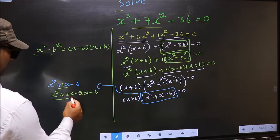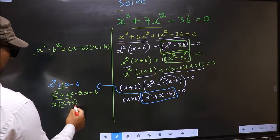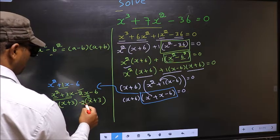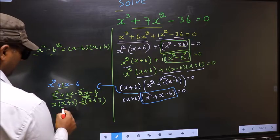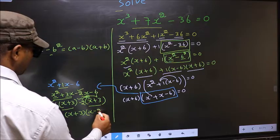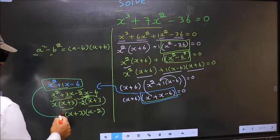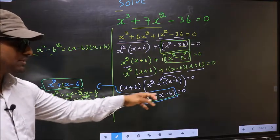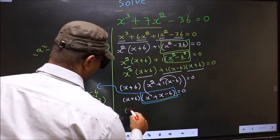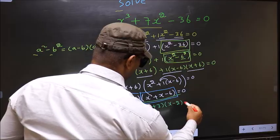Next. Now, from these two terms, what can be taken out common? x. So here you get x plus 3. Now, whatever you got here, here also you should get the same thing. From this, x gone inside, outside you get minus 2. Even if you multiply and check, still you get the same thing. Now, you take out x plus 3 common. So here you have x and here minus 2. In place of this quadratic, now I will write this.